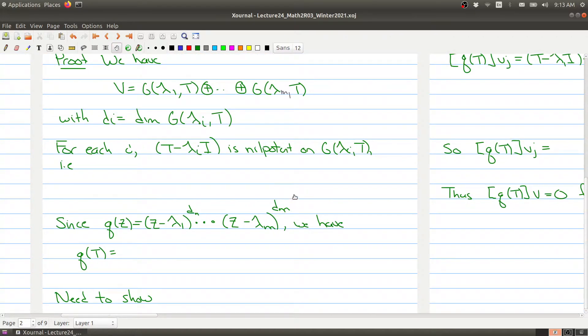We also know that for each i, this particular operator is nilpotent on this subspace. Nilpotent just means that if I take (T - λᵢI) raised to the dimension of this space and evaluate it at v, I get zero. This is true for all vectors v in this subspace. That's the property of being nilpotent.